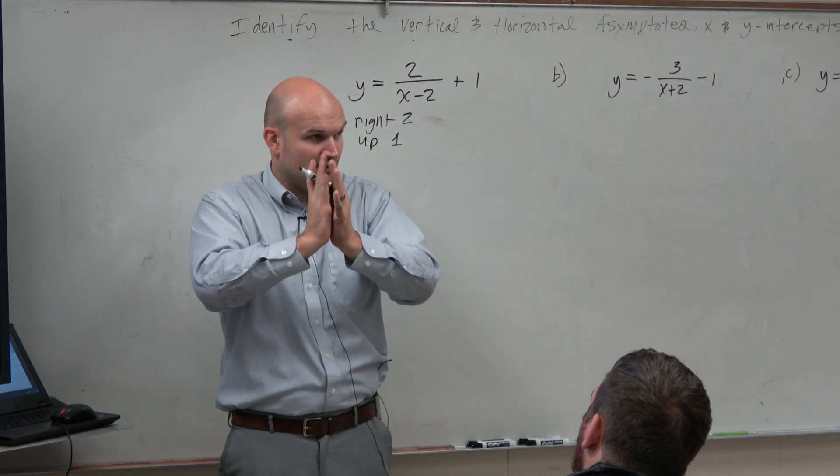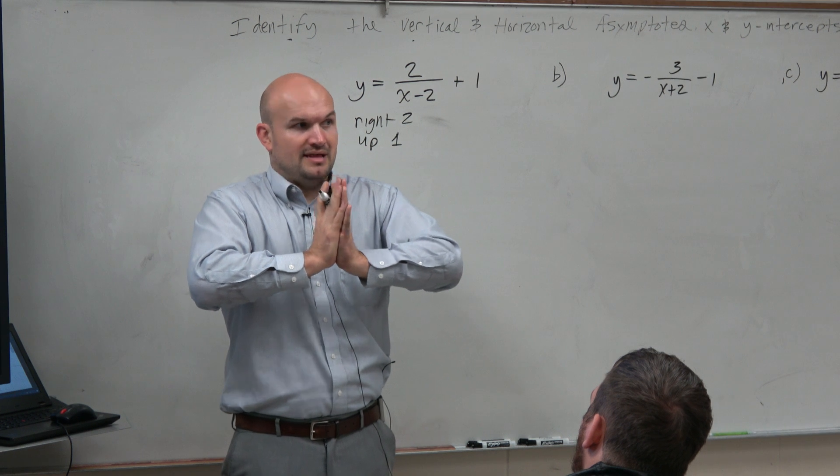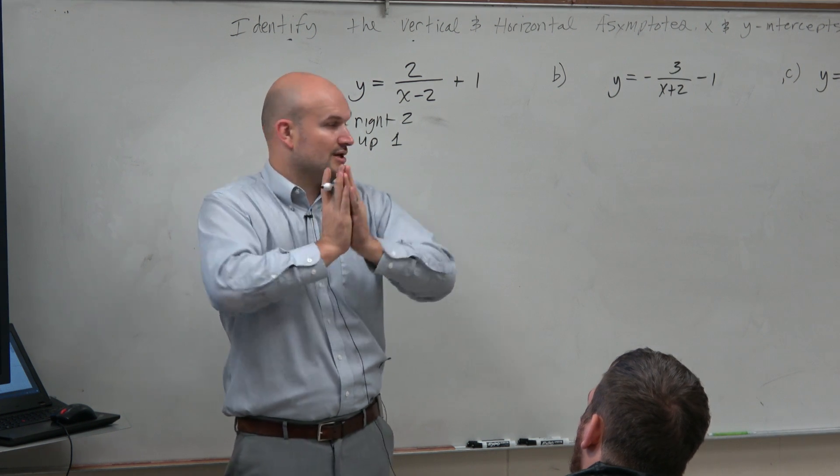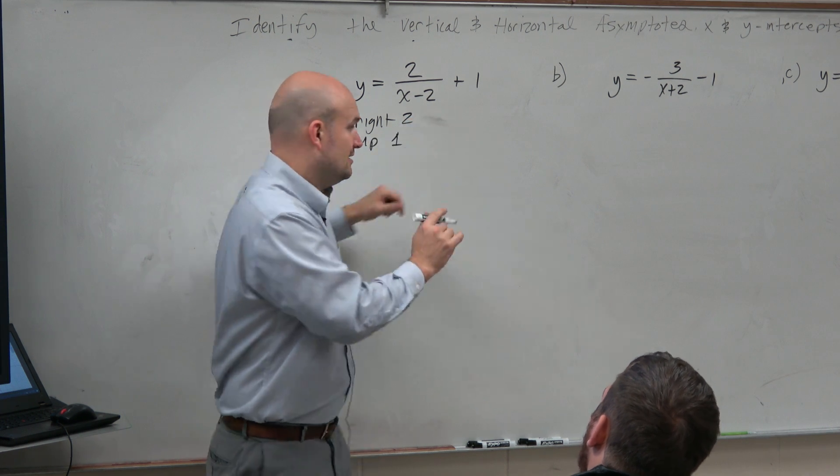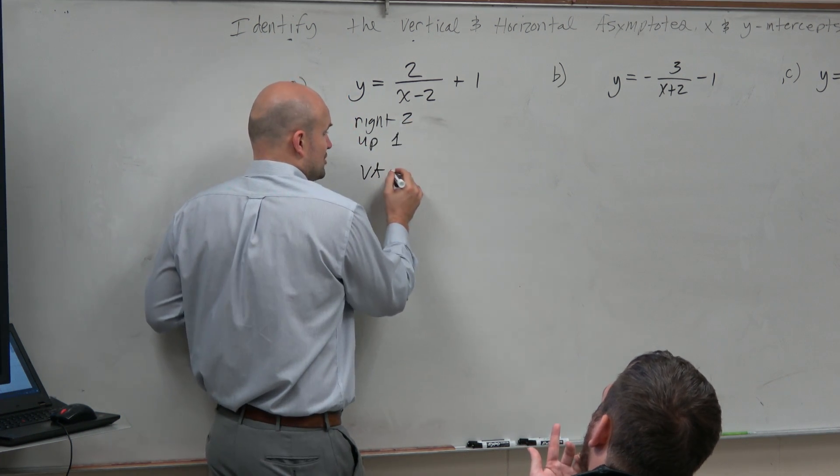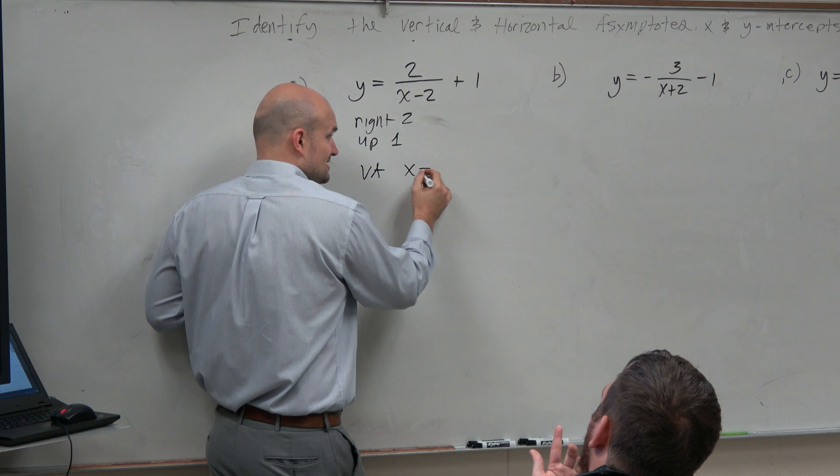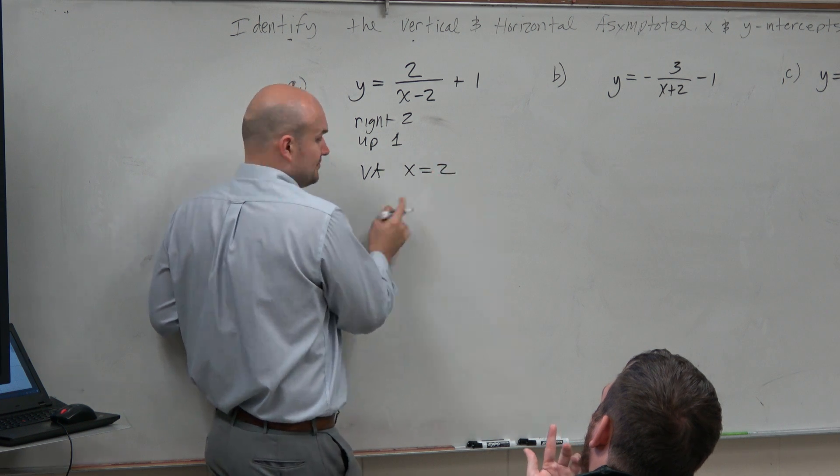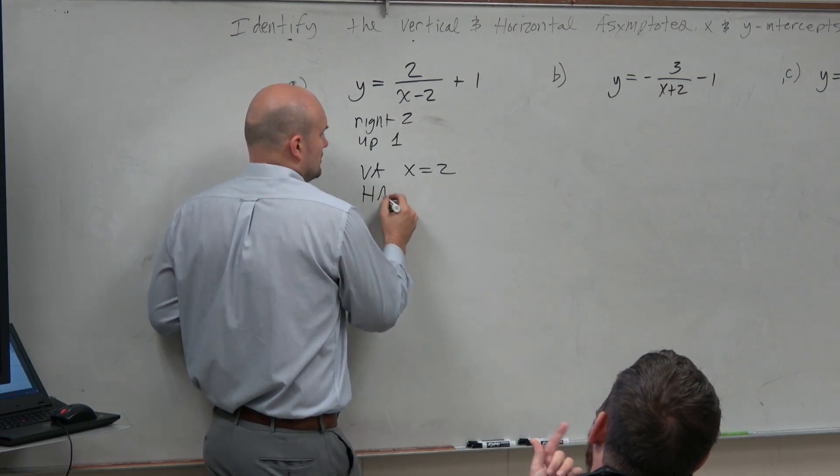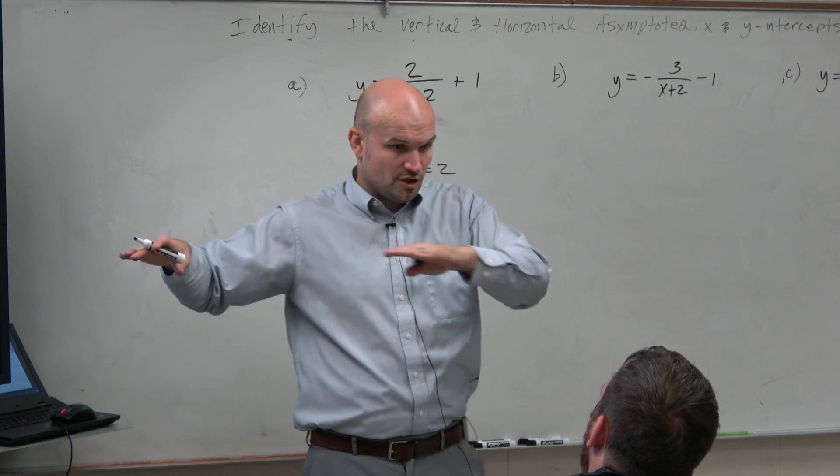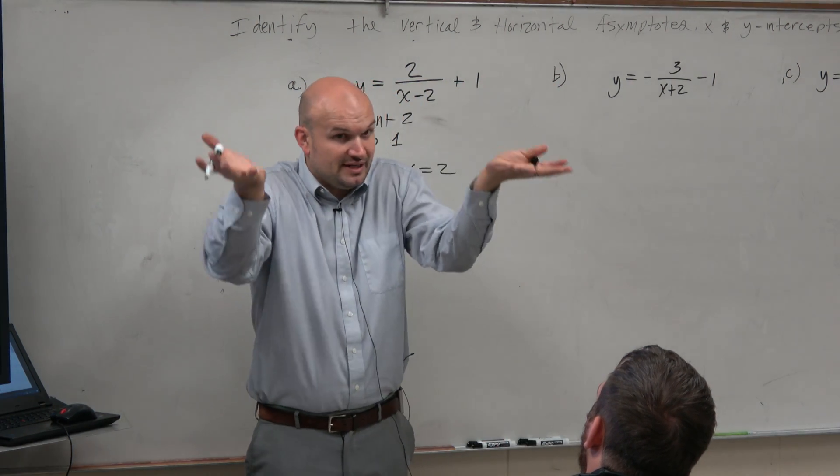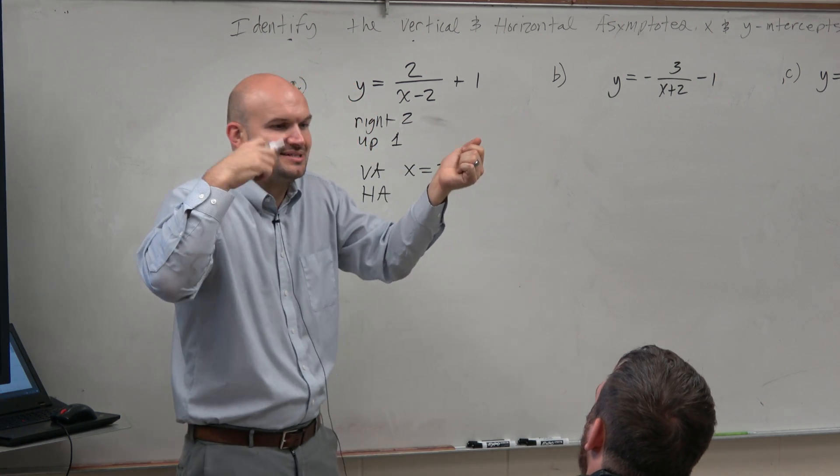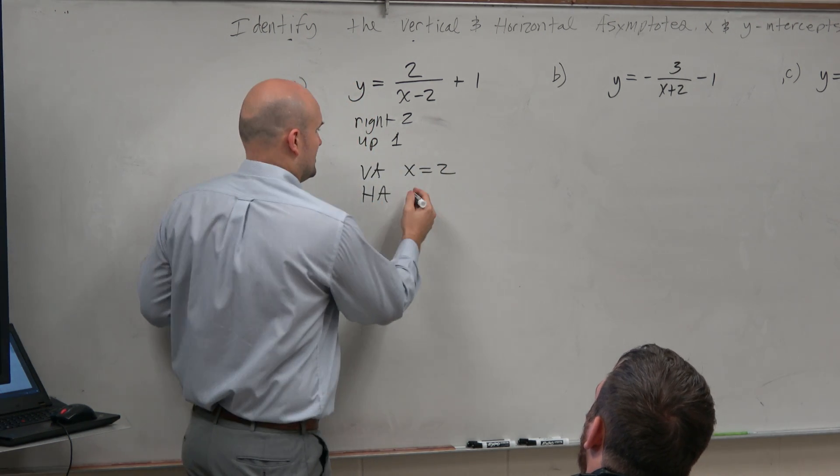So going back to my original parent function, 1 over x, that has a vertical asymptote at x equals 0. If my graph is being shifted two units to the right, that means my new vertical asymptote is at x equals 2. And y would be y equals 1. So my horizontal asymptote is originally at y equals 0, but my graph just got shifted up 1. My new horizontal asymptote is at y equals 1.